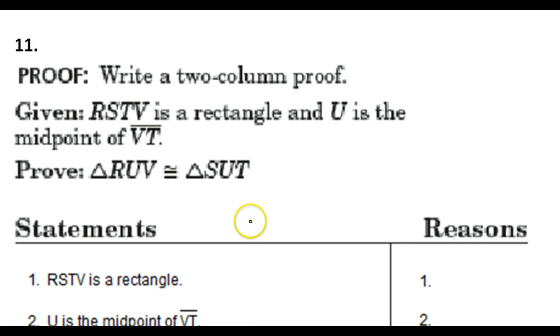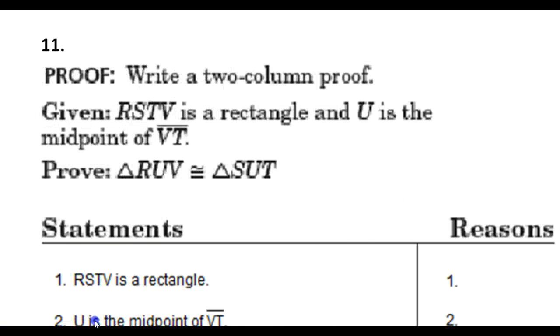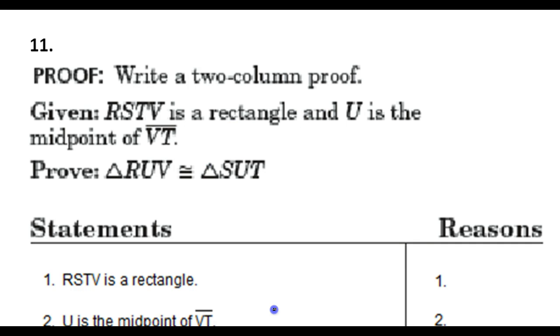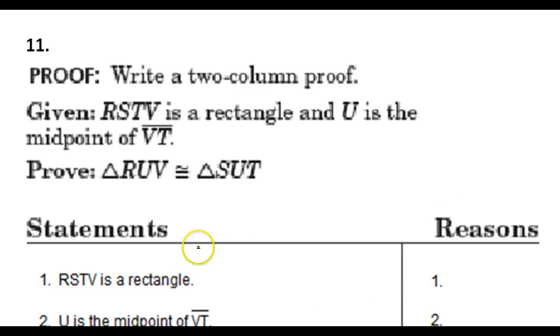Now number 11 is a proof. Let's see what we have. Given RSTV is a rectangle and U is the midpoint of VT. U is the midpoint. That means by definition of midpoint, VU and UT will be congruent. It's a rectangle. Because it's a rectangle, that gives us a lot of information. By the definition of a rectangle, we know that all of the angles will be right angles, including V and T.